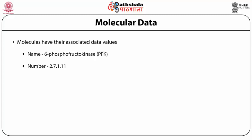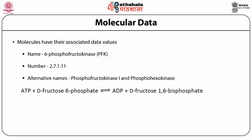And finally, the fourth number, the number 11 in this example, conveys that it is the 11th enzyme in the list of all known in this group defined by the first three numbers. In addition to this name and assigned number of an enzyme, alternative names may also be known for some enzymes, as in this case for phosphofructokinase — phosphofructokinase 1 and phosphohexokinase. Most importantly, the basic data about enzymes is the reaction catalyzed by each enzyme. In this example, the reaction catalyzed by 6-phosphofructokinase is the reaction of D-fructose-6-phosphate with ATP to yield ADP and D-fructose-1,6-bisphosphate.